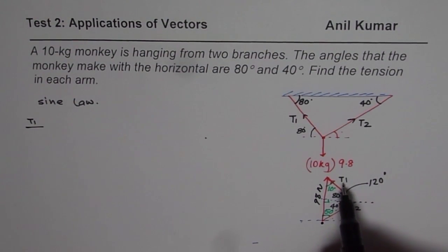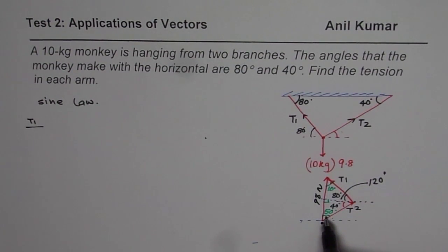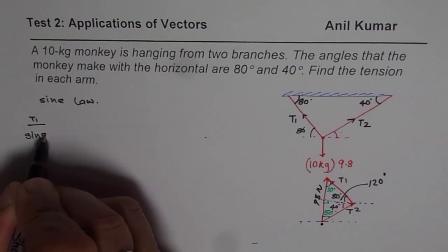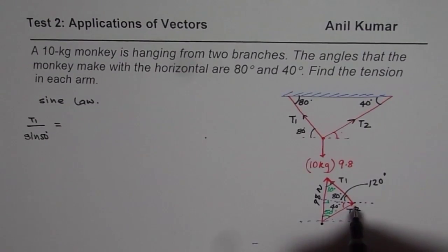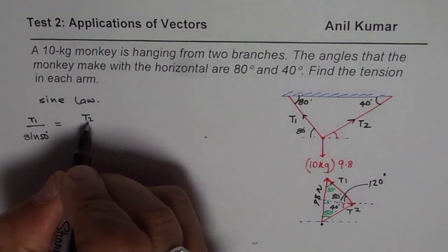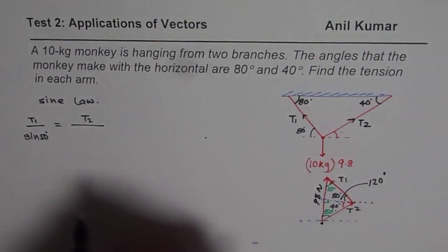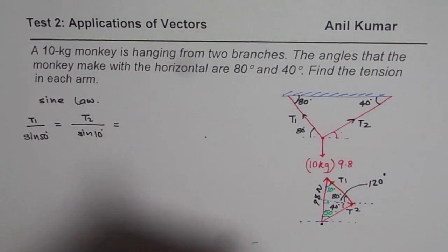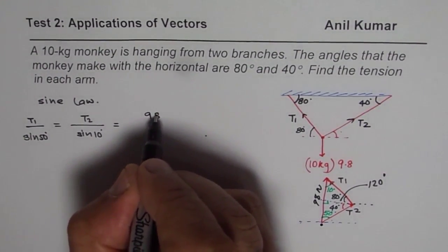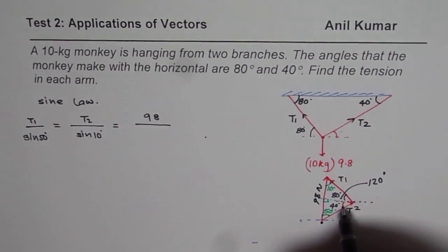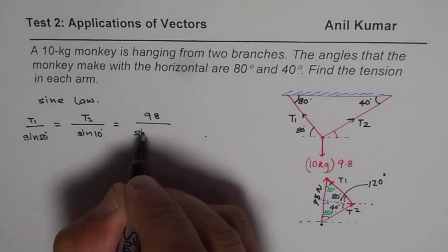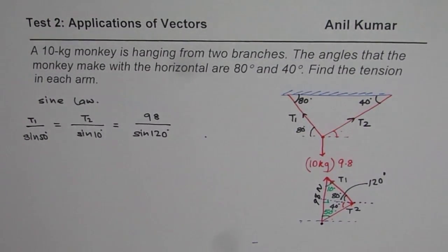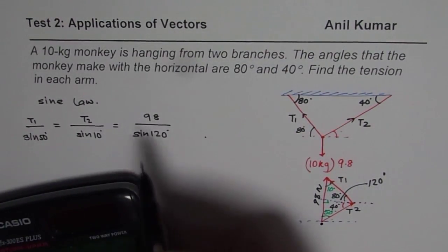So in this particular triangle, the angle opposite to T1 is 50 degrees. So it is T1 over sine of 50 degrees equals tension T2 over the angle opposite to T2 which is 10 degrees, sine of 10 degrees, should be equal to 98 newtons divided by the angle opposite to it, which is sine of 120 degrees.